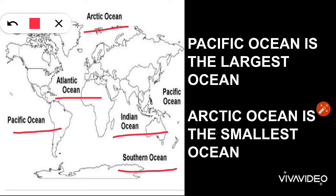In your book, you will find only four oceans, so don't get confused. Pacific Ocean is the largest ocean and Arctic Ocean is the smallest one.